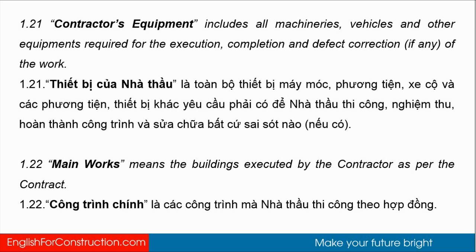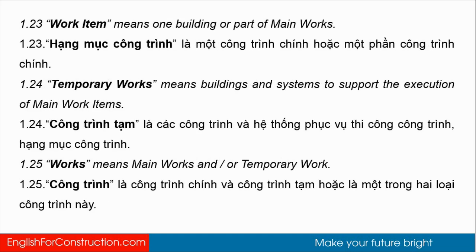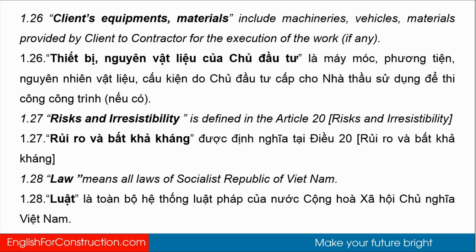1.22 Main Works means the buildings executed by the contractor as per the contract. 1.23 Work Item means one building or part of main works. 1.24 Temporary Works means buildings and systems to support the execution of main work items. 1.25 Works means main works and/or temporary works. 1.26 Client's Equipment and Materials include machineries, vehicles, and materials provided by the client to the contractor for the execution of the work, if any. 1.27 Risks and Irresistibility.